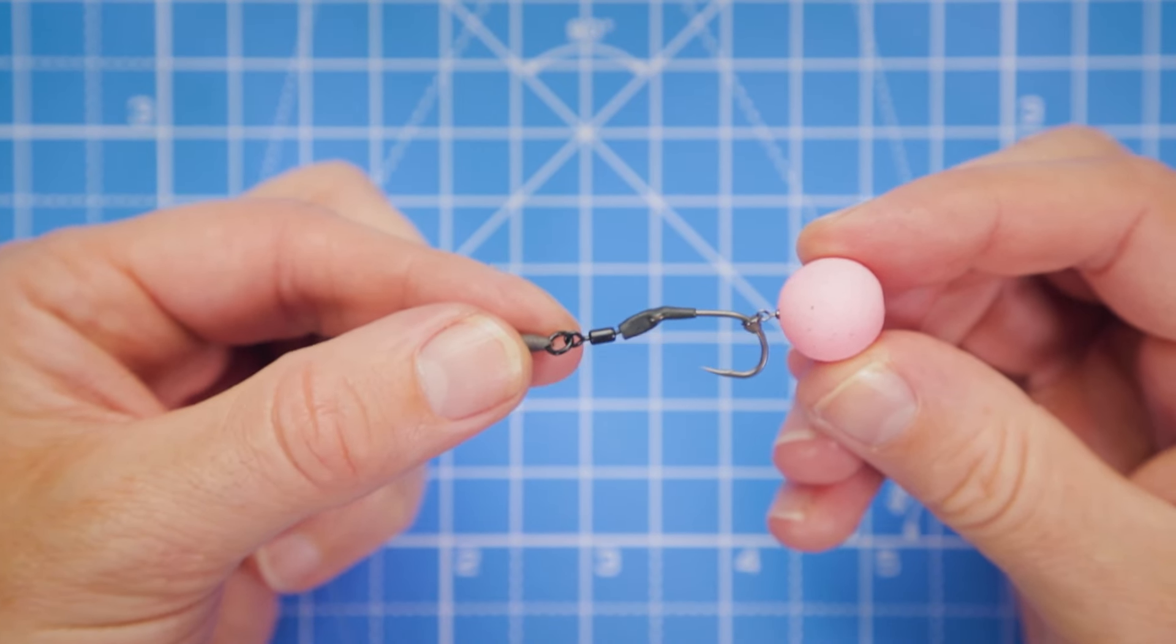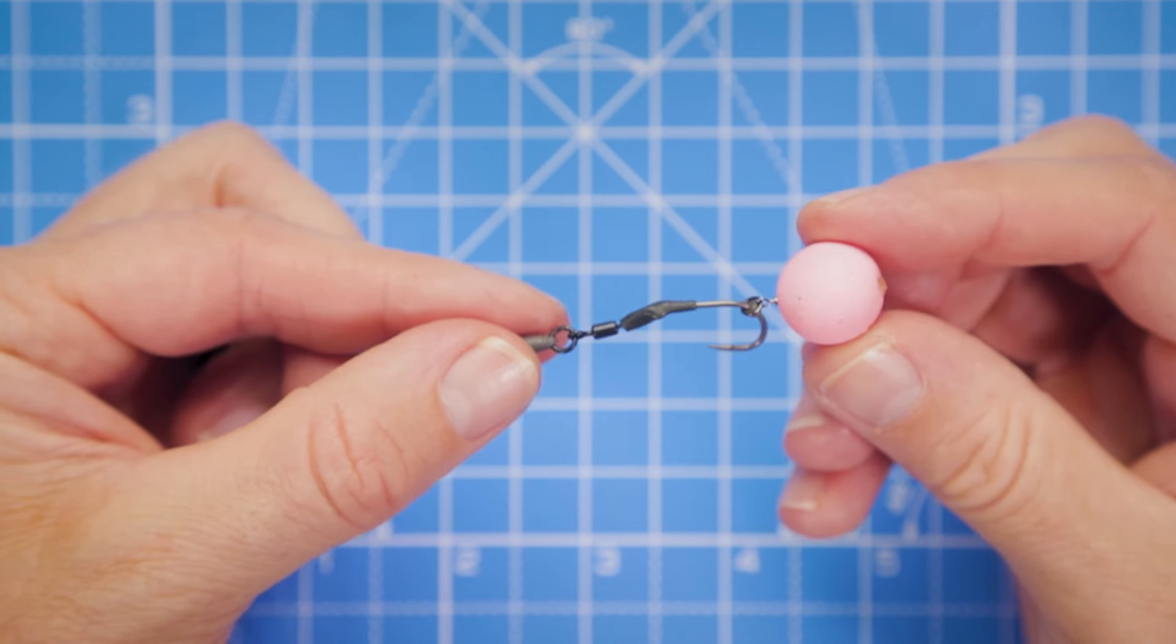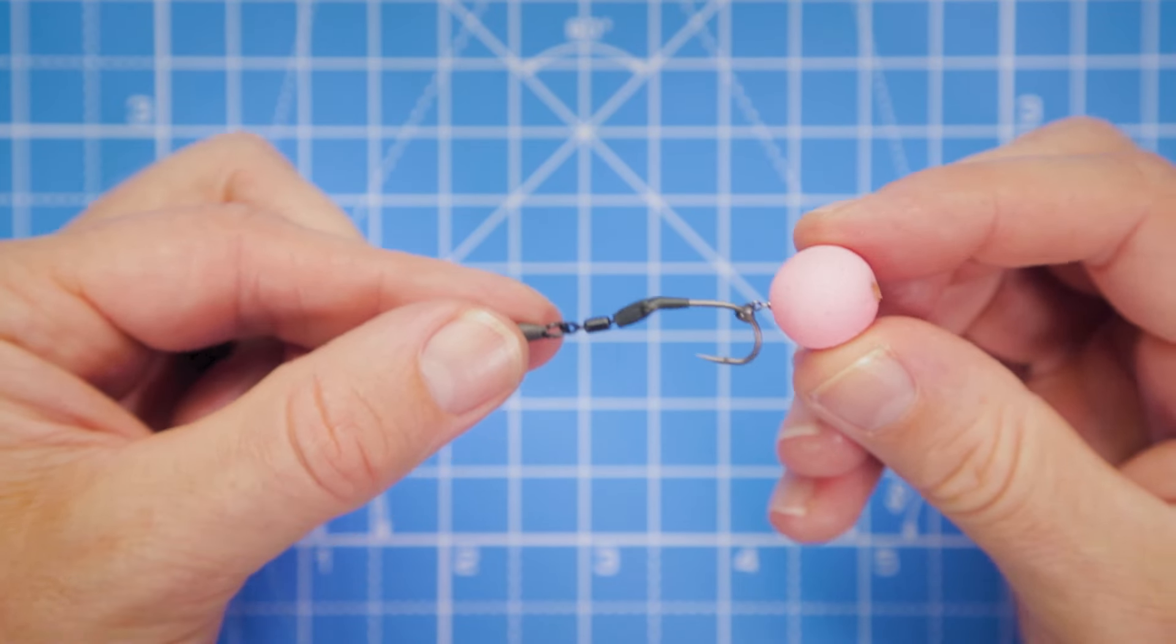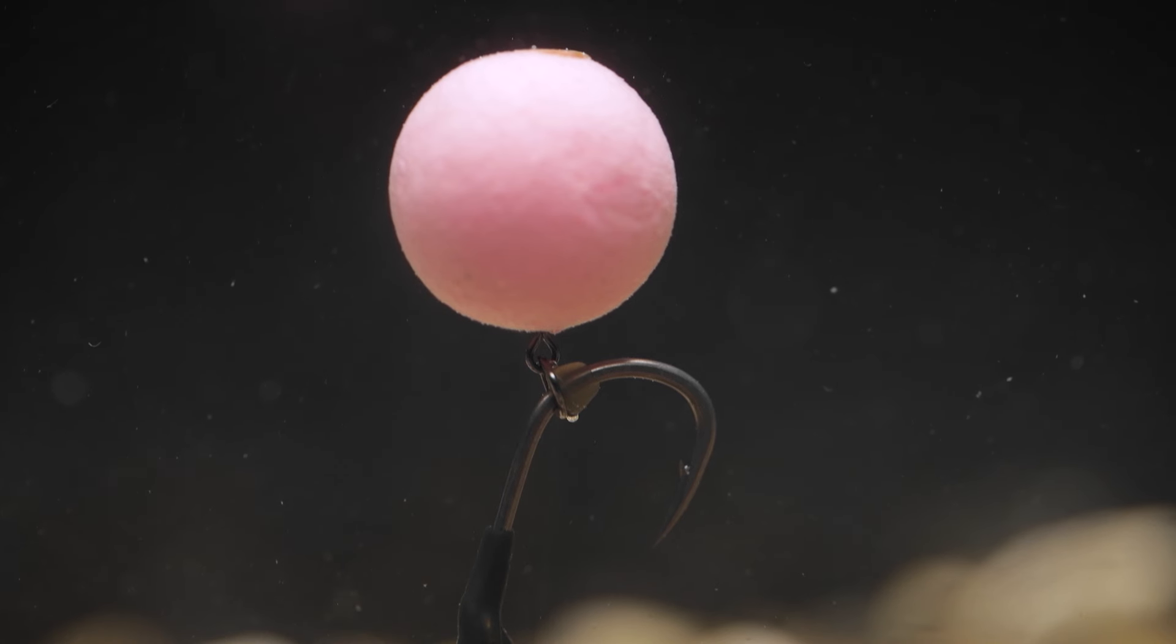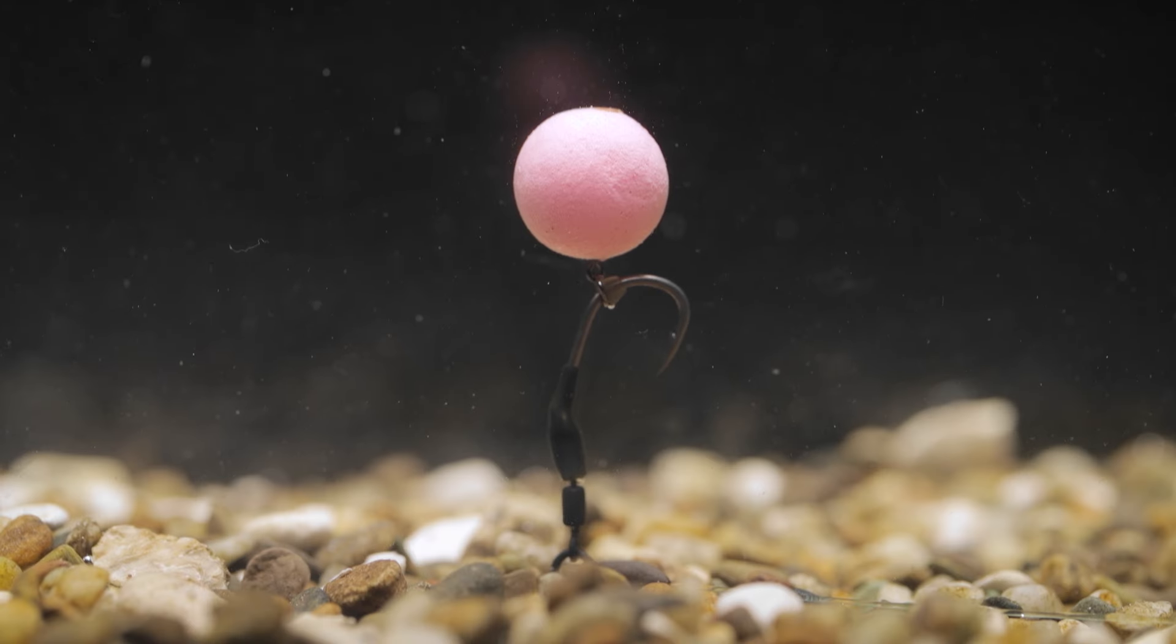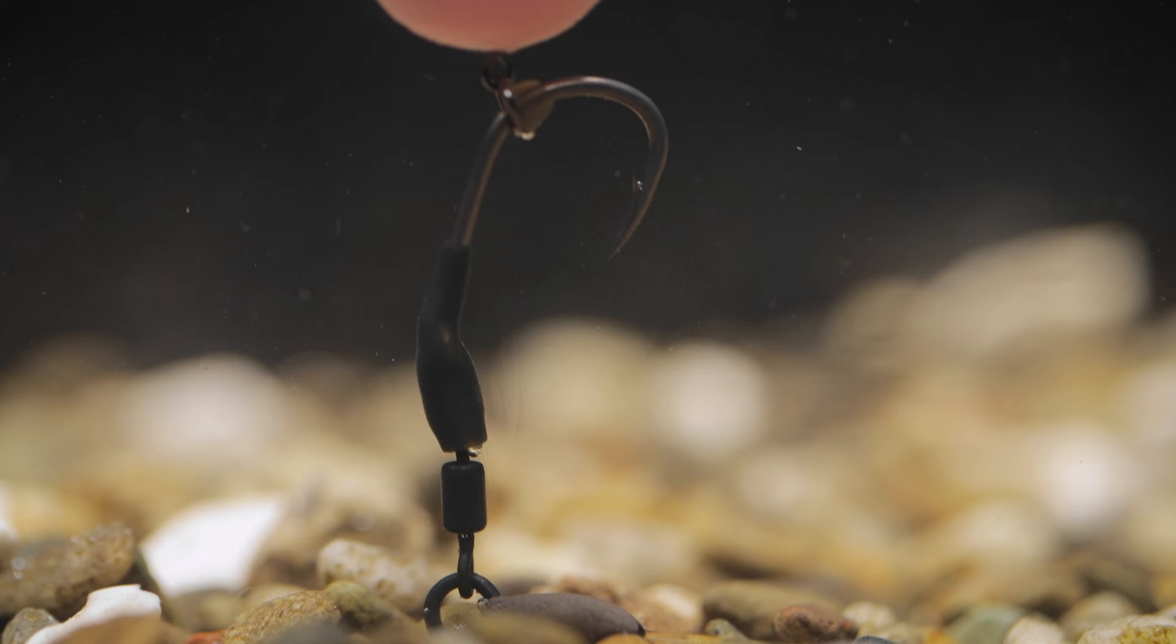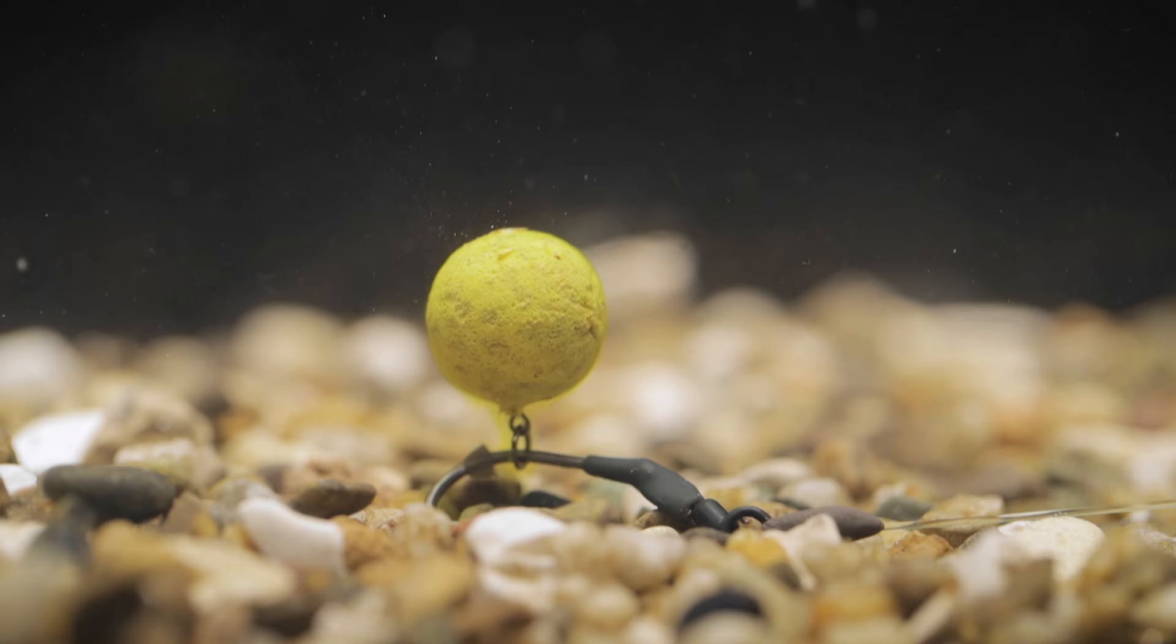Our spinner rig is complete. Super easy, super tidy, and super effective in the water. You can see that our pop-up is now presented perfectly with the hook in a claw-like position, poised and ready to grab hold of any investigating fish. The rig also positions the hook bait at a nice height away from the lake bed, meaning that it will sit above any debris such as silt, chod, or light weed, but is also close enough to the lake bed should you want to use it on a cleaner area.